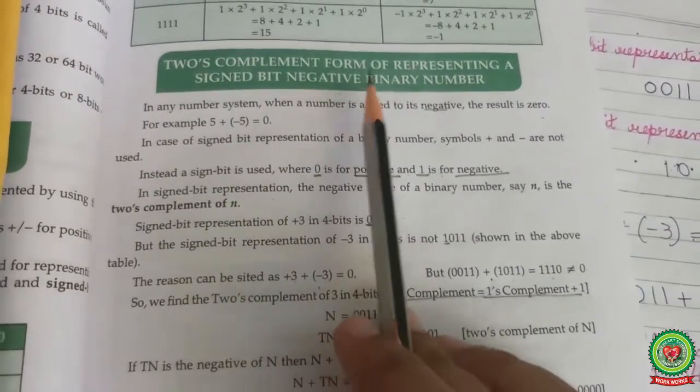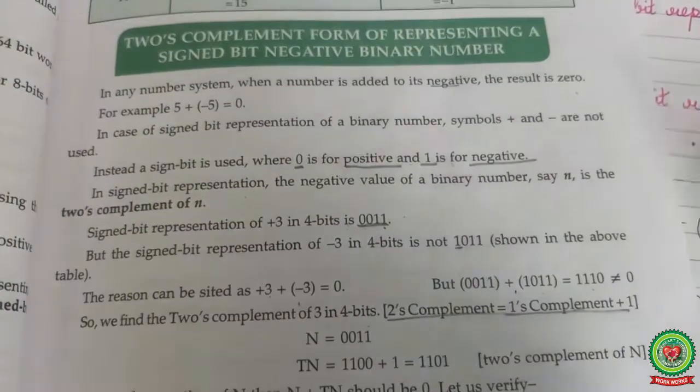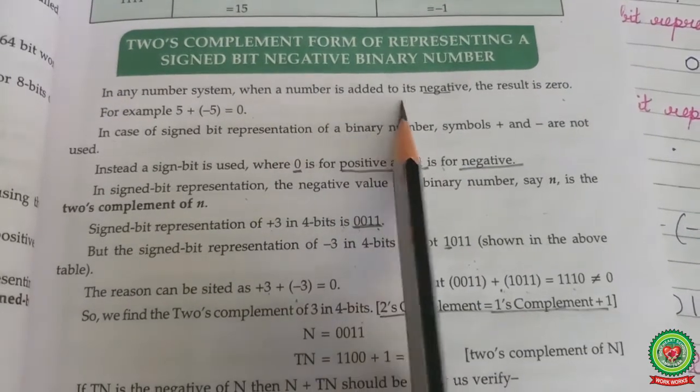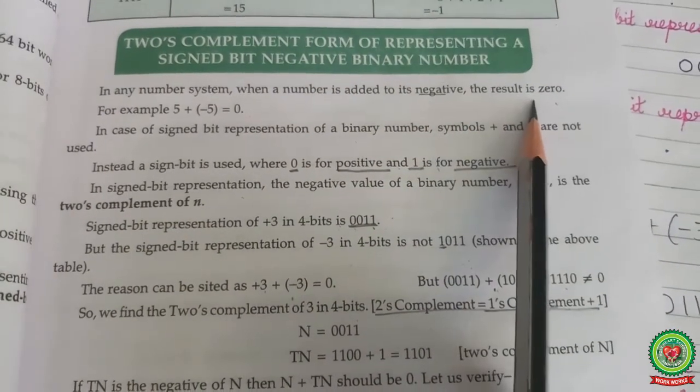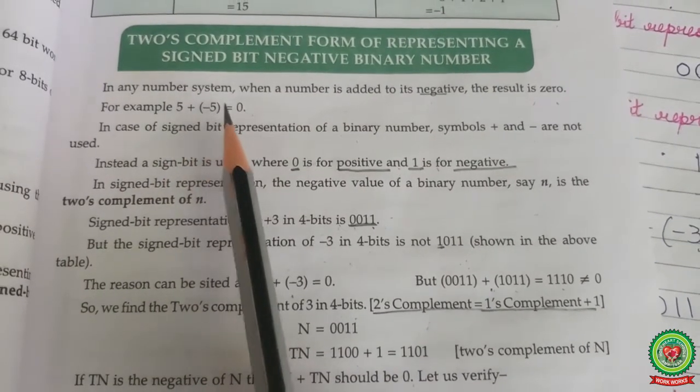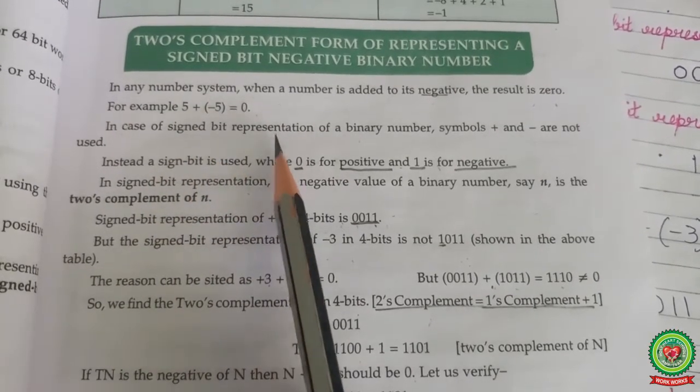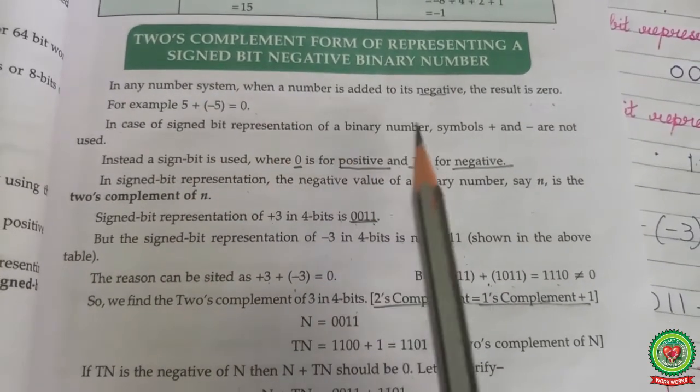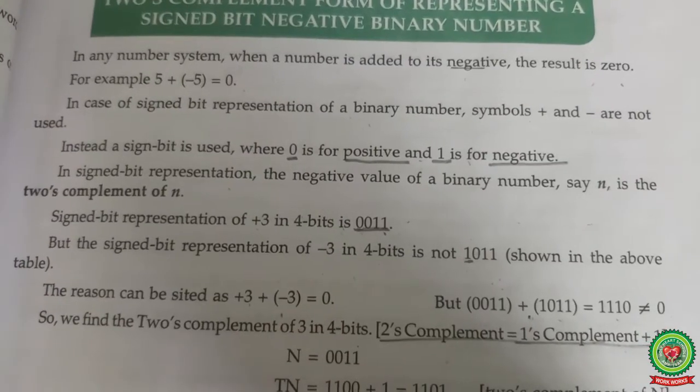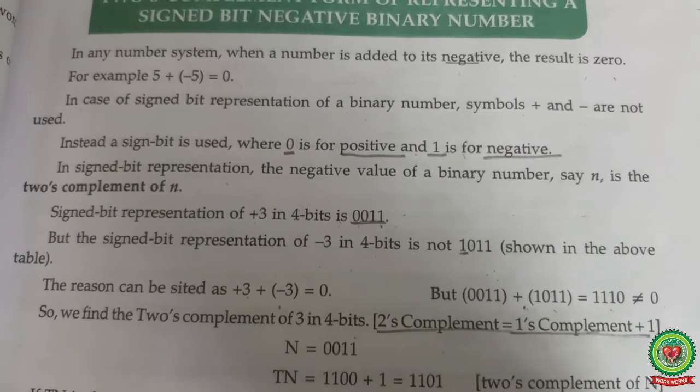Two's complement form of representing a signed bit negative binary number. In any number system, when a number is added to its negative, the result is zero. For example, 5 plus minus 5 equals 0. In case of signed bit representation of a binary number, symbols plus and minus are not used. Instead, a signed bit is used where 0 is for positive and 1 is for negative.